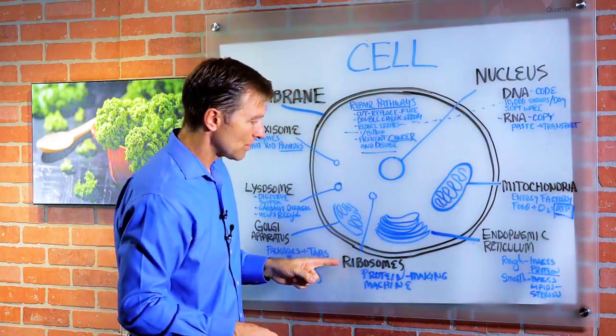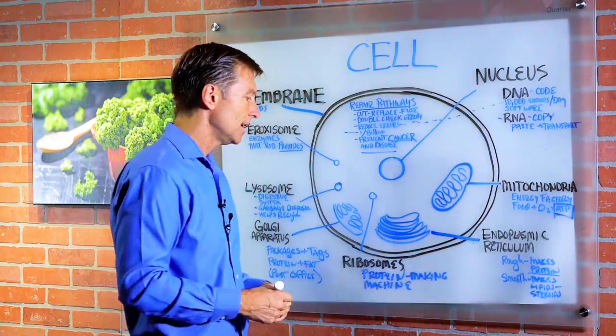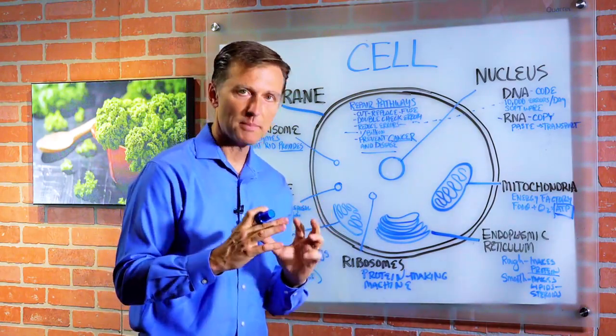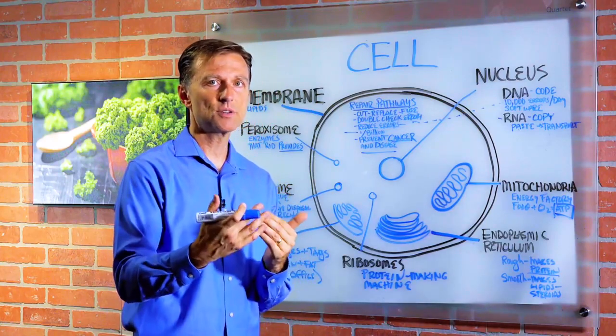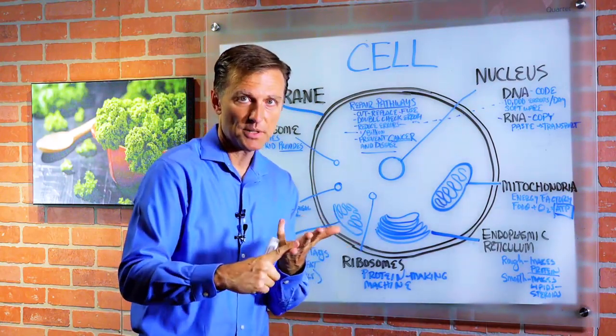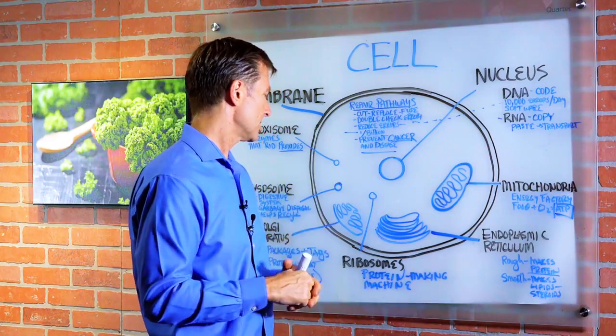And then we have these little things called ribosomes, which are basically protein-making machines on steroids. So they actually help in making different protein structures, not just for body parts, but for body chemicals like hormones and neurotransmitters, blood cells, you name it.